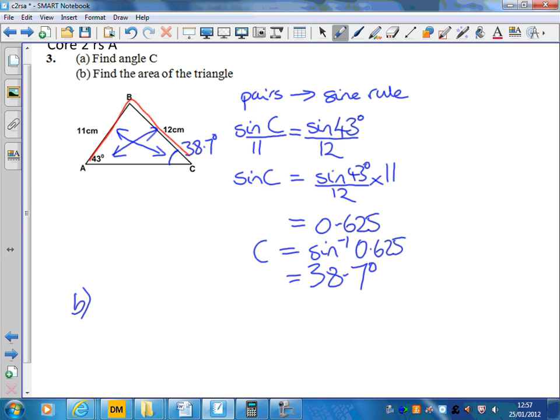Here I have two sides, and the angle between them is B. So first I need to work out what angle B is. Remember in a triangle there are 180 degrees, so angle B is 180 take away 43 take away 38.7 degrees, and that tells me it's 98.3 degrees.